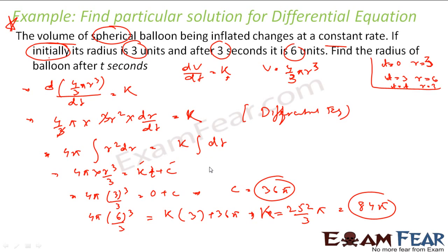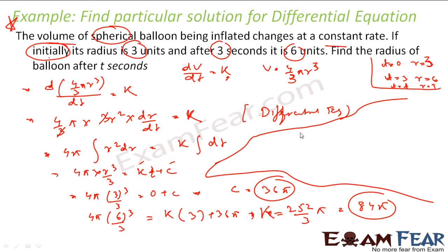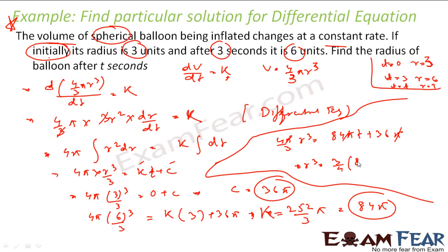Substituting back, the general equation becomes 4π/3 · r³ = 84π · t + 36π. Cancelling π and simplifying: r³ = (3/4)(84t + 36) = 63t + 27. Therefore, r = (63t + 27)^(1/3).